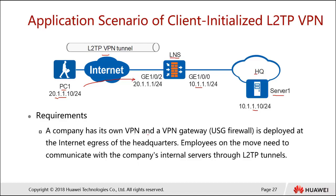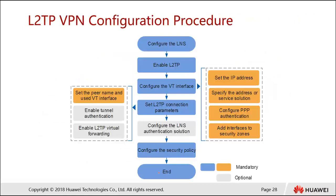The requirement: a company has its own VPN, and a VPN gateway, which is a USG firewall, is deployed at the internet egress of the headquarters. Employees on the move need to communicate with the company's internal server through L2TP tunnels. Let's look at the configuration procedure.